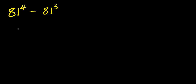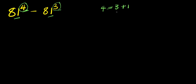Hello, you are welcome. In this video we are going to evaluate — without our calculator — 81 to the power of 4 minus 81 to the power of 3. Let's consider the exponent 4 and the other one which is 3. I can decide to replace this 4 with the summation of 3 and 1, since 4 equals 3 plus 1. So I'm going to have 81 to the power of 3 plus 1, which is the same as 4, minus 81 to the power of 3.